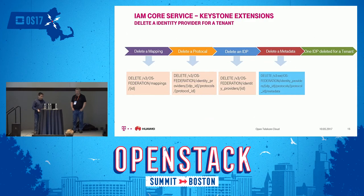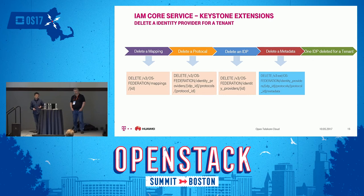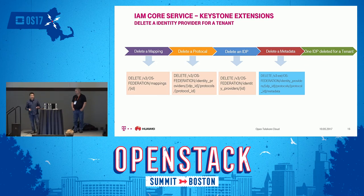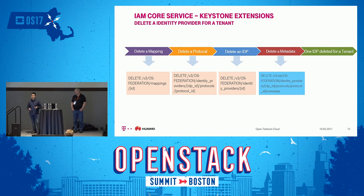To delete an identity provider for a tenant, the steps are simpler compared to creation. Just delete the mapping, delete the protocol, and delete the IDP — these three steps use the native Keystone APIs. And the fourth step is to delete the metadata file, which uses our extension APIs for Keystone. Then one identity provider will be deleted from this tenant.